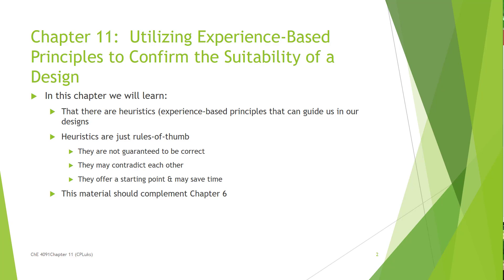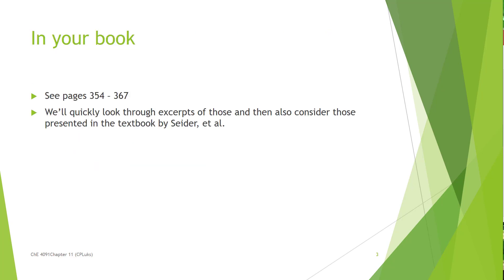This material actually complements what we did when we were in chapter 6. In your book, in the fifth edition, we are looking at pages 354 to 367, and we'll quickly look through those. Then in class we'll also look at some that are in the book by Cider.